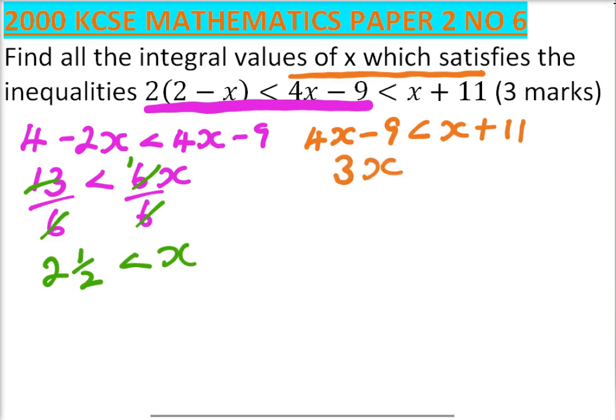Take 9 to the right side, it becomes positive. So 11 plus 9 becomes 20. Divide both sides by 3. When you do that, 3 divided by 3 you get 1, and 20 divided by 3 you get 6 and 2 thirds.